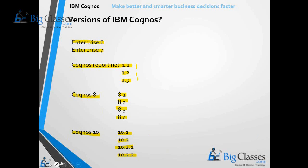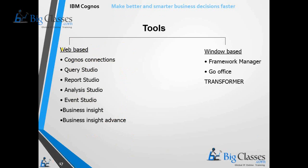Now let us see what different tools are available in IBM Cognos. They are broadly divided into two types: web-based applications and Windows-based applications. Web-based means no need to install any software on your machine — just like Gmail, you can work using any browser. Windows-based means we need to install software on our machine and work with it locally.